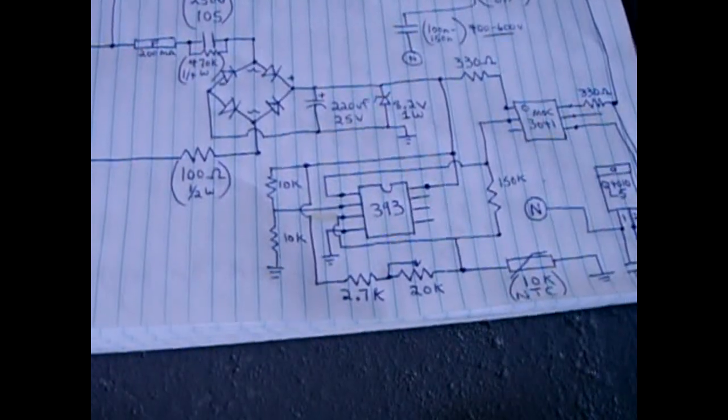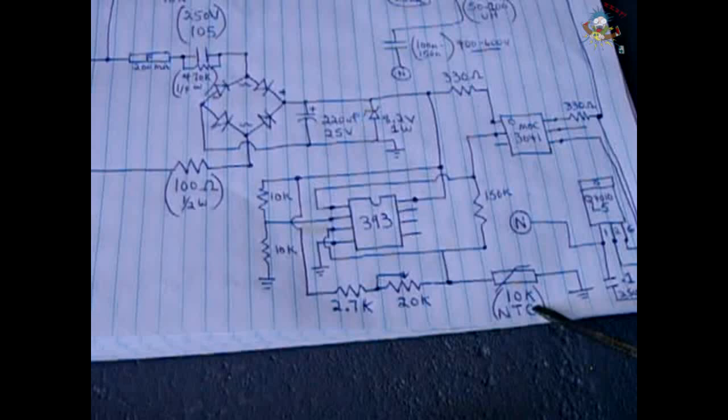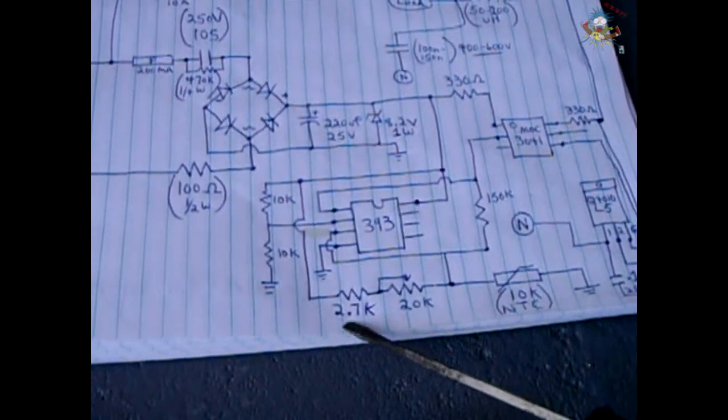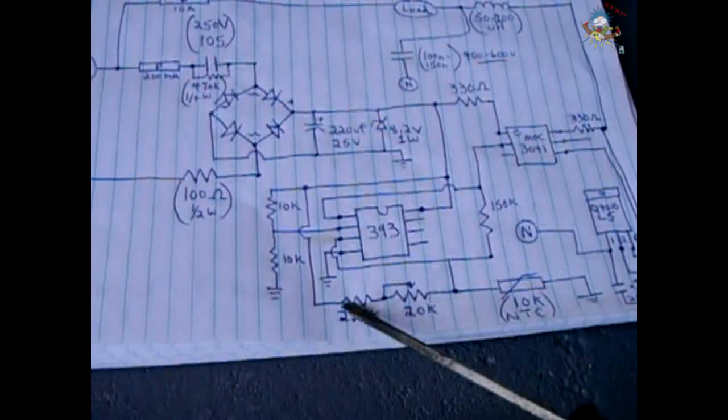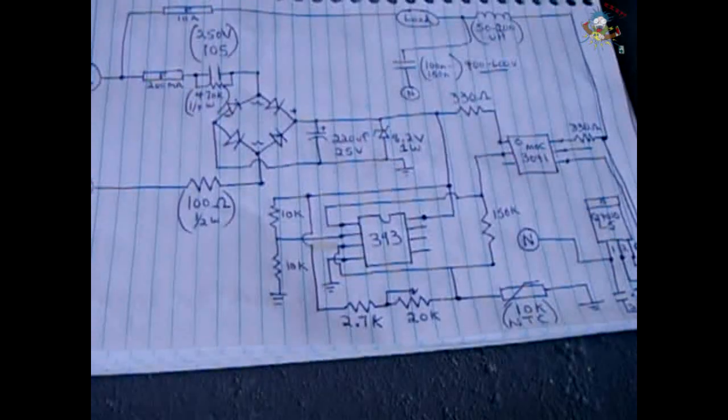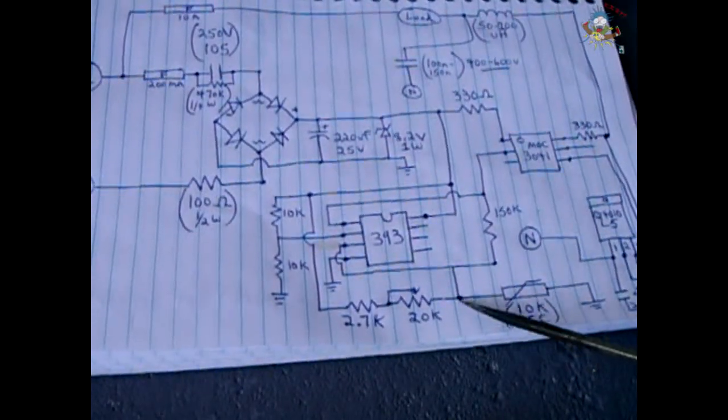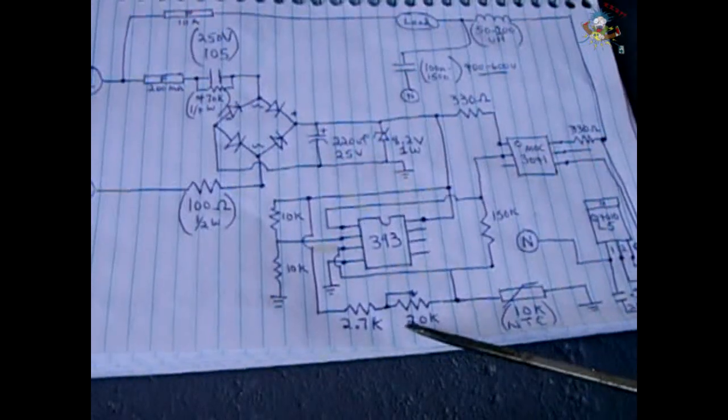If you want the circuit to be triggered by cold instead of heat, you would take this thermistor right here and put it in the position where the 2.7K in series with the 20K pot is, and you would take this group right here and put them where the 10K was. The setup will now cause this voltage to drop going into pin 3 as it gets colder.